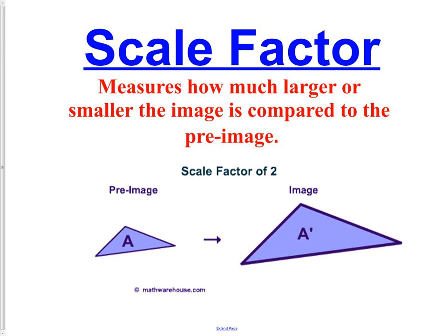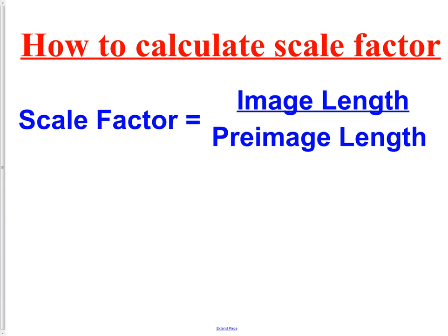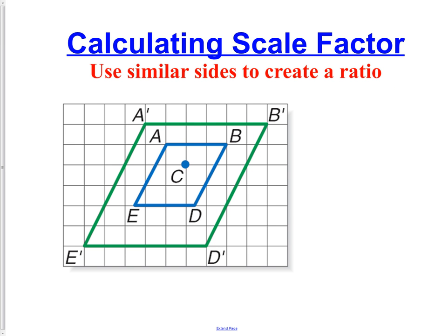In our picture, the smaller triangle is called the pre-image, and the enlarged one — with a scale factor of 2, meaning everything was multiplied by 2 — is called the image, labeled with a prime. Scale factor is simply the image length over the pre-image length: the new item over the original item. That's our formula for calculating scale factor.